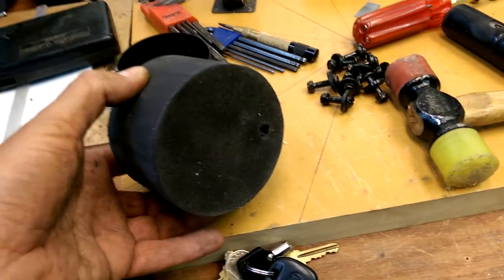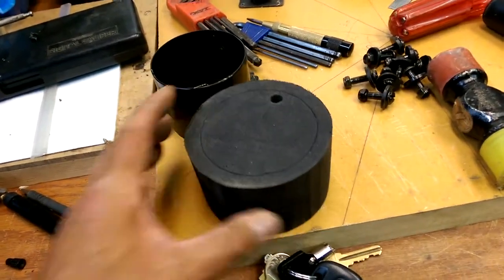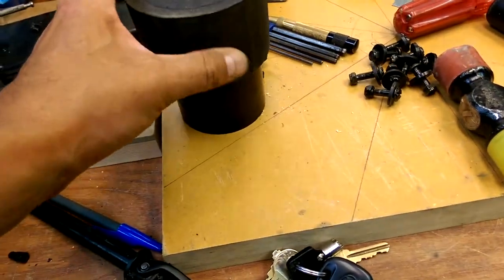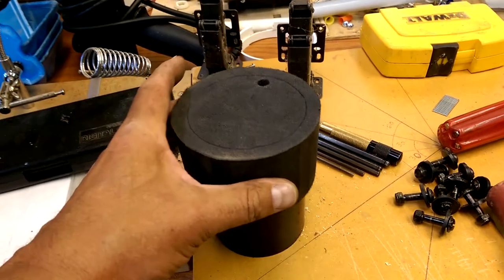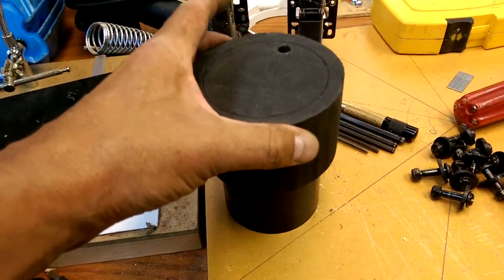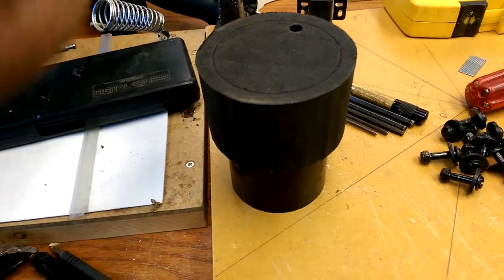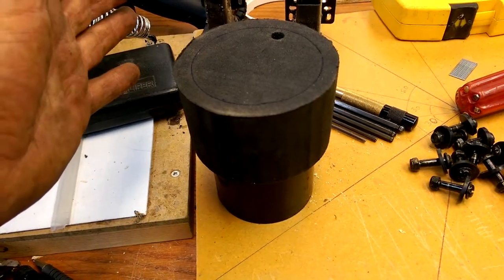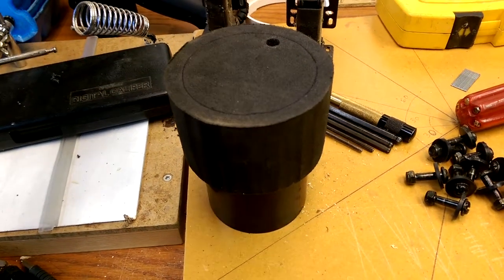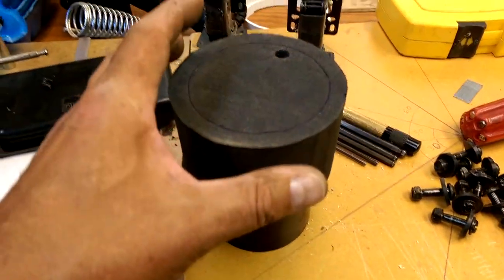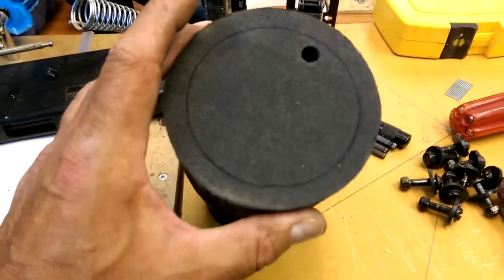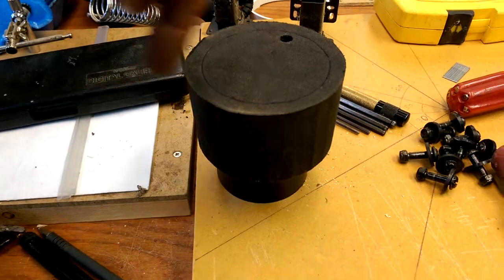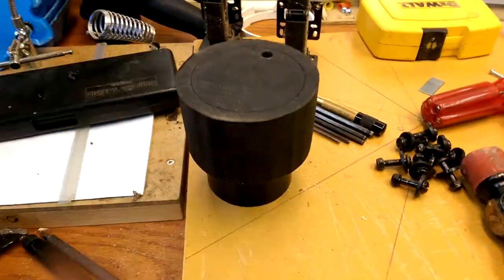So I've got this closed-cell foam cut into a circular piece. I'm going to cut out the center so it becomes a donut. I'm not going to eat this. Now I just have to get the coping saw and cut out the inner circle.